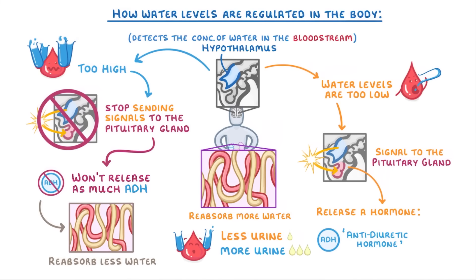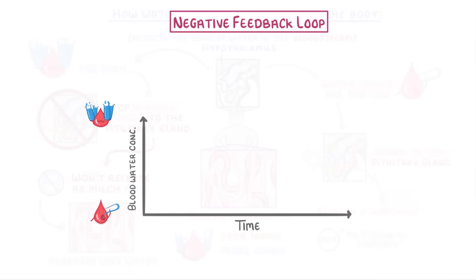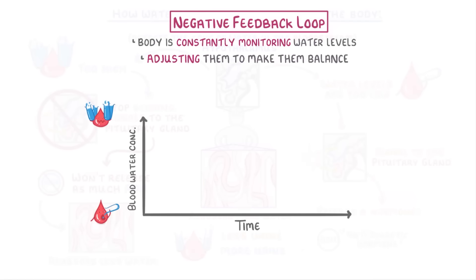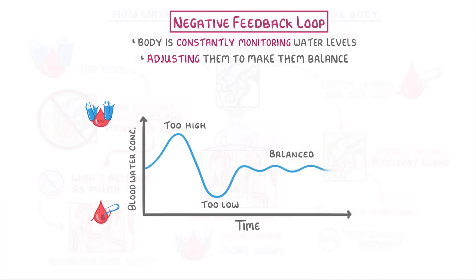One last thing to mention is that this whole process of water regulation is an example of a negative feedback loop, because the body is constantly monitoring our water levels and adjusting them to keep them balanced. So if the water levels get too high, then the body will bring them back down. And if the water levels get too low, then the body will bring them back up. Overall, the body manages to keep our water levels almost perfectly balanced all the time.